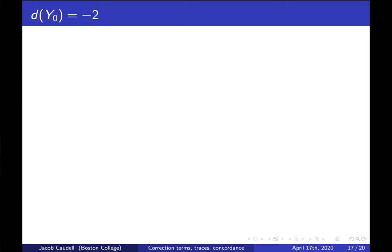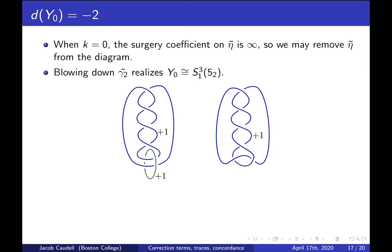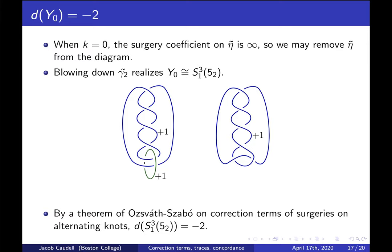Now we'll show d(Y₀) = −2. When k = 0, we can ignore η̃, and if we blow down along γ̃₂ — a Kirby calculus manipulation — the resulting diagram realizes Y₀ as +1 surgery on the knot 5₂ in S³. By a theorem of Ozsváth-Szabó on correction terms of surgeries on alternating knots, we can explicitly compute that the d-invariant is −2.